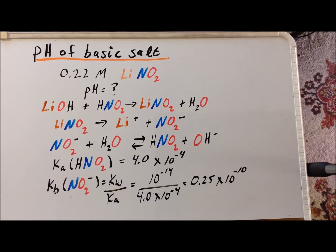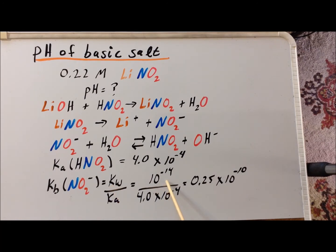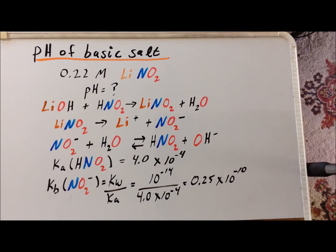To calculate the Kb of nitrite ion, we recall that Kb is equal to Kw divided by the Ka of the conjugate acid. At 25 degrees centigrade, Kw, the dissociation constant for water, is 10 to the minus 14. Ka we have already seen is 4.0 times 10 to the minus 4. So this gives us the Kb of nitrite ion being 0.25 times 10 to the minus 10, and we're going to leave it in that form.